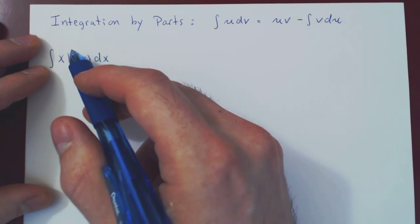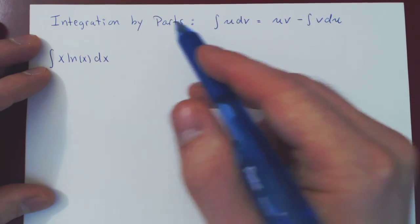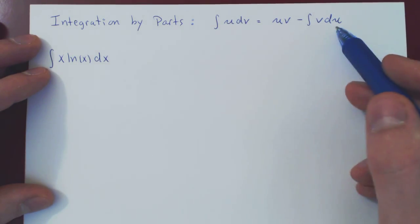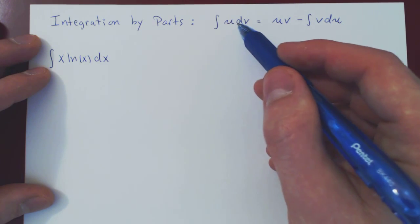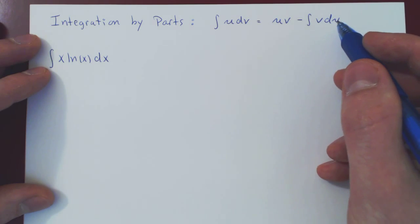Okay, so in this video we will consider our first example of integration by parts. If you remember, integration by parts is the following equality: the integral of u dv equals uv minus the integral of v du.